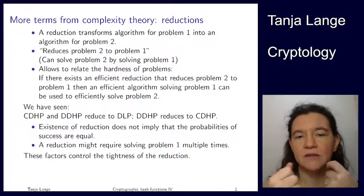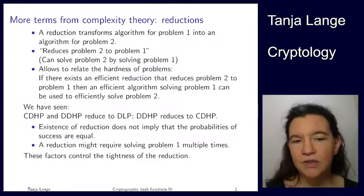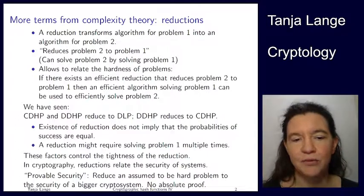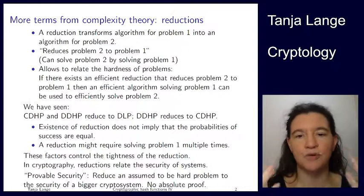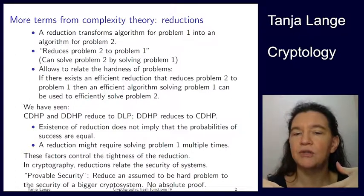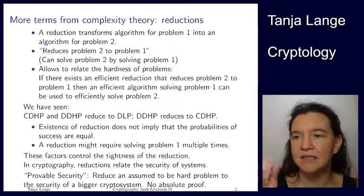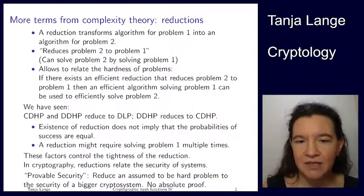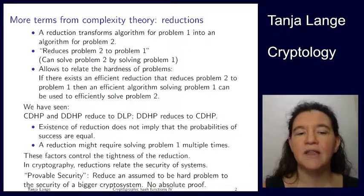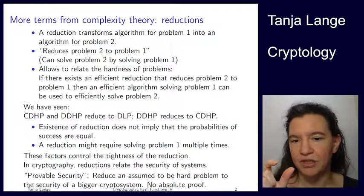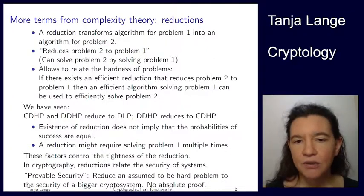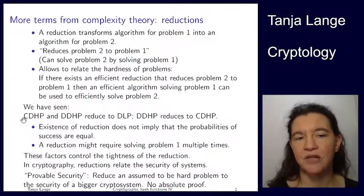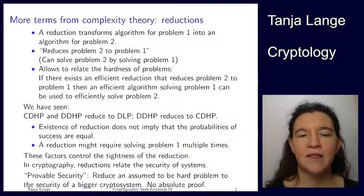We want to relate the security of one problem to the security of another — this is called provable security or security proofs. You're designing a new protocol that deep inside uses some math assumption, and you want to relate it to that assumption. The math assumption is nice, clean, abstract, and people have studied it — for instance, discrete logs. And now you want to reduce the hard assumption — the thing assumed not solvable — to the problem of breaking a computer system.